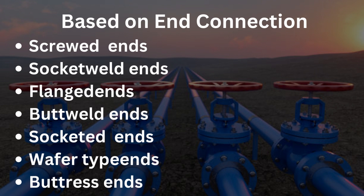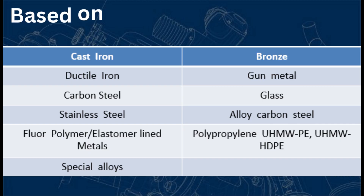Another classification is based on end connection, which refers to the arrangement for attachment of valves to equipment or piping. The types of end connections are: screwed ends, socket weld ends, flanged ends, butt weld ends, socketed ends, wafer type ends, and buttress ends.